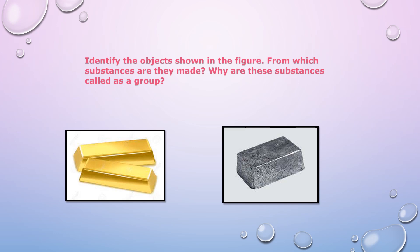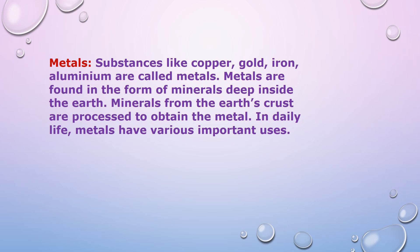Copper, gold, iron, and aluminium are all metals. Substances like copper, gold, iron, and aluminium are called metals. Metals are found in the form of minerals deep inside the earth, and minerals from the earth's crust are processed to obtain the metal. In daily life, metals have various important uses.